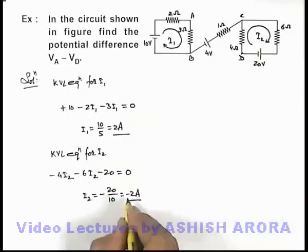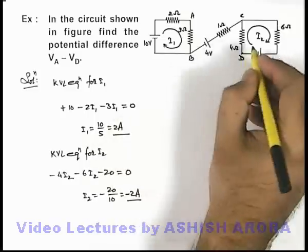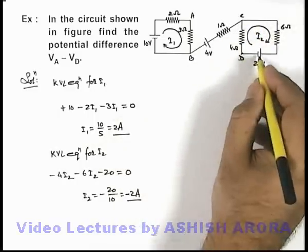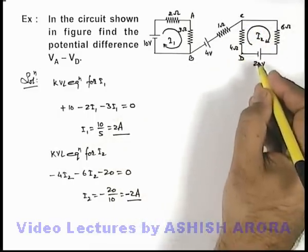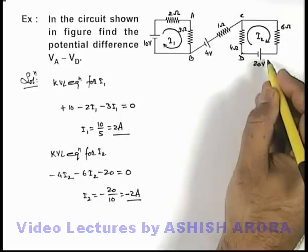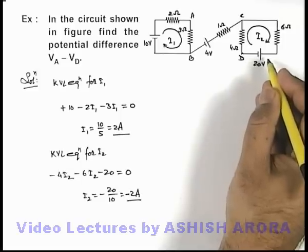And here it is with negative sign we are obtaining. That means actually current is not flowing clockwise, it is in anti-clockwise manner, because this 20 volt battery is supplying the current.